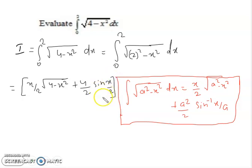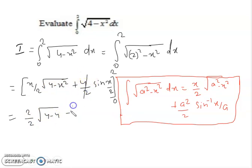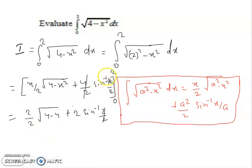The limit is 0 to 2. Putting in the upper limit 2: we get (2/2)√(4 - 4) + 2·sin⁻¹(2/2). Since √0 = 0, that term vanishes, giving 2·sin⁻¹(1). Putting in the lower limit 0 gives 0 + 2·sin⁻¹(0) = 0.